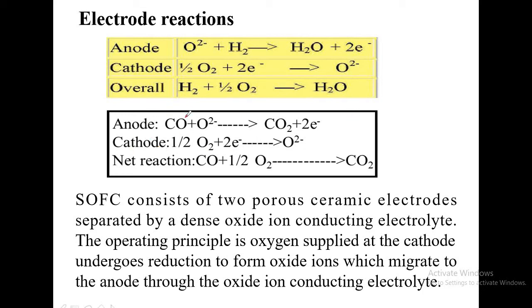If carbon monoxide is used as the fuel, it also reacts with the oxide ions of the electrolyte, and carbon dioxide is formed with the release of electrons. The carbon dioxide escapes as flue gas. At the cathode, oxygen reacts with the electrons to form oxide ions, which travel through the electrolyte back to the anode. As long as carbon monoxide and oxygen are supplied, the reactions continue, ultimately converting all the carbon monoxide into carbon dioxide.